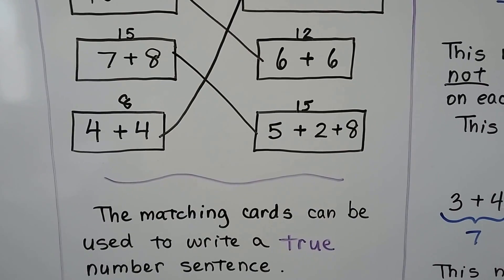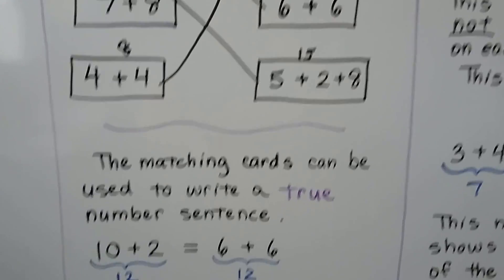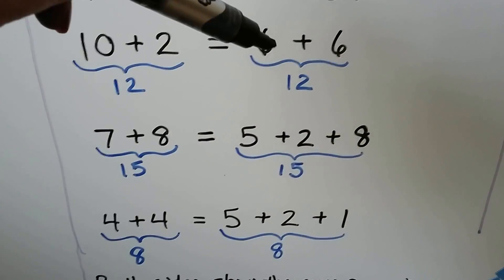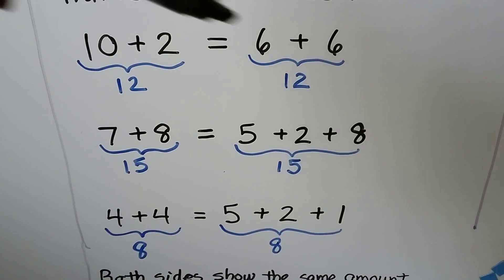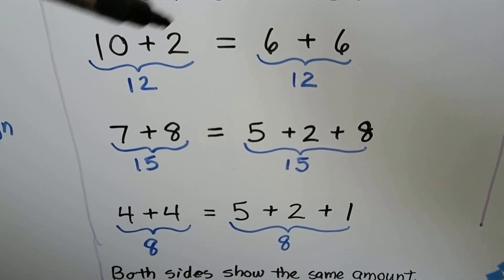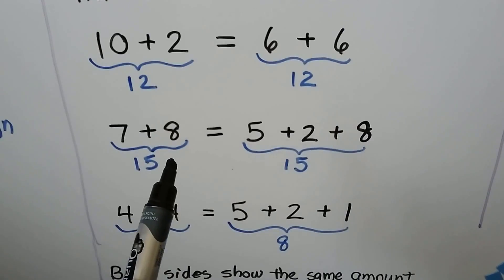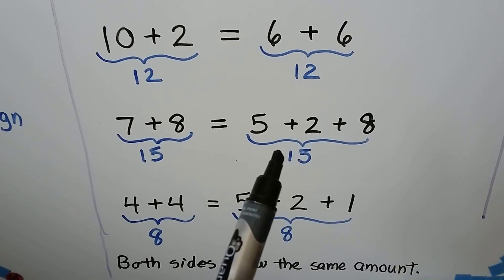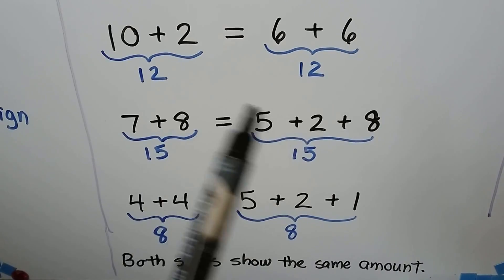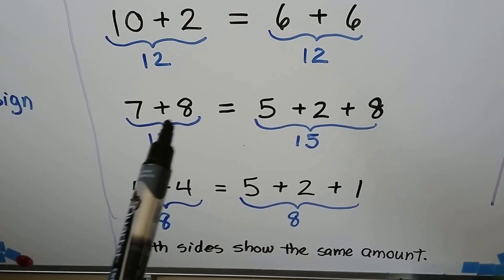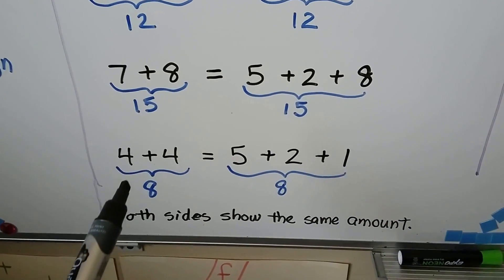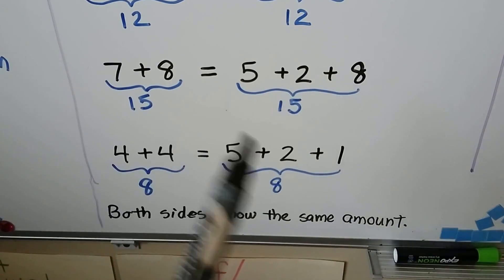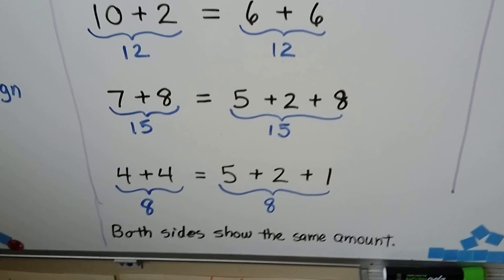The matching cards can be used to write a true number sentence. 10 plus 2 is 12, and so is 6 plus 6. Both sides of the equal sign are showing the same amount — they're both showing 12. 7 plus 8 is 15, and 5 plus 2 plus 8 is equal to 15. Both sides show the same amount. 4 plus 4 is equal to 8, and 5 plus 2 plus 1 is equal to 8. Both sides show the same amount, so they're true.